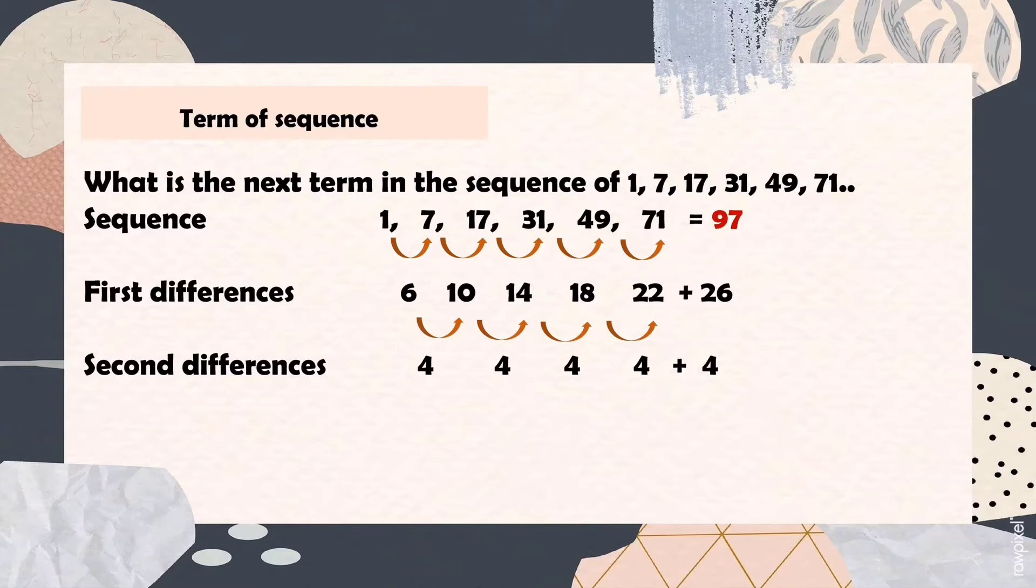By using this sequence, we are going to get the differences. When the differences are already equal, we can predict the next term. So how are we going to do that? First step is we are going to get first differences. We are going to subtract the first term from the second term. So 7 minus 1 equals 6, 17 minus 7 equals 10, 31 minus 17, that is 14.